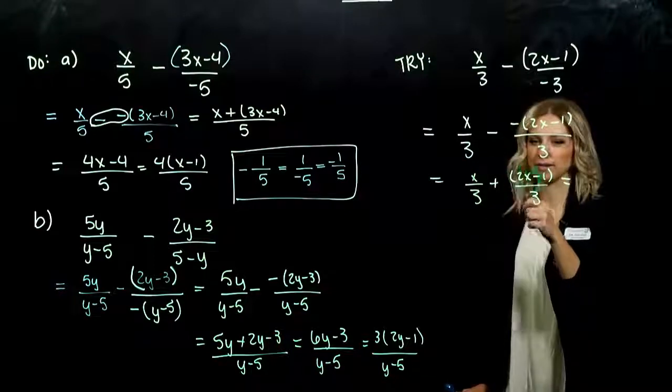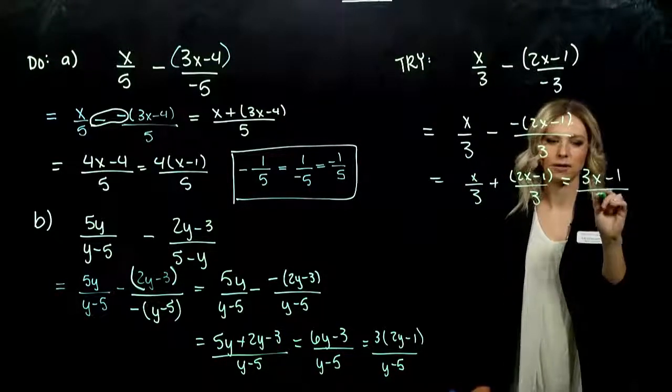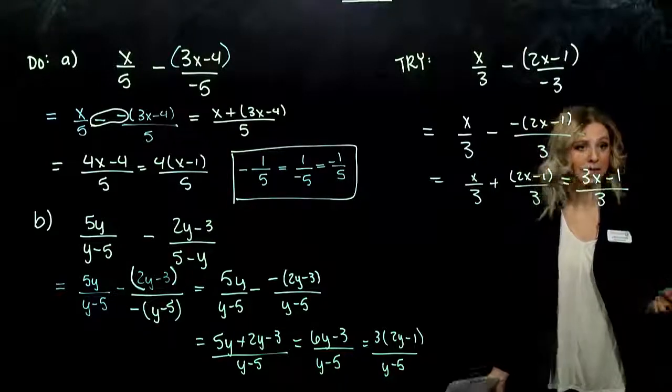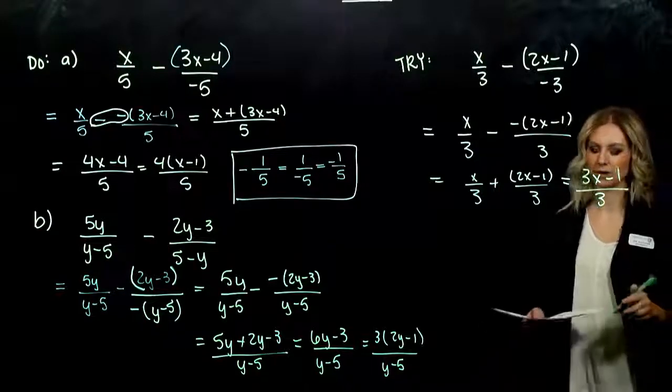How many factors of x do I have? 3 all together, and a negative 1. That's over 3. Anything that we can take out? Nope. We factored and simplified as far as we can go.